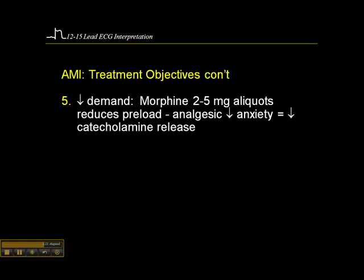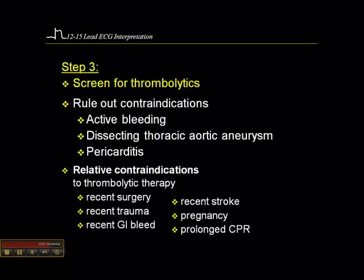We can also decrease demand on the myocardium by administering morphine sulfate at doses of 2 to 5 mg aliquots. Morphine is also a venodilator, so it reduces preload and decreases workload and myocardial oxygen consumption. It's also an analgesic, making the patient more comfortable and less anxious, which has the effect of blunting the sympathetic response — decreasing catecholamine release — and that in turn decreases heart rate and workload on myocardial oxygen consumption.